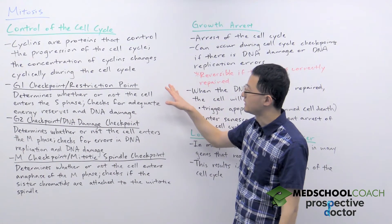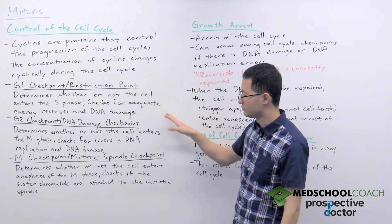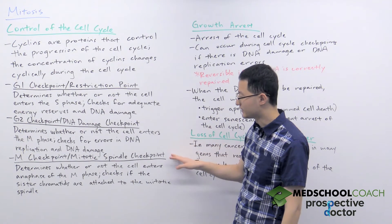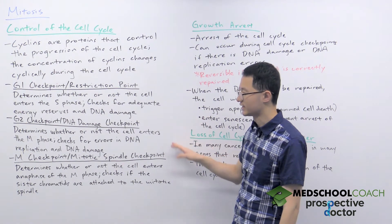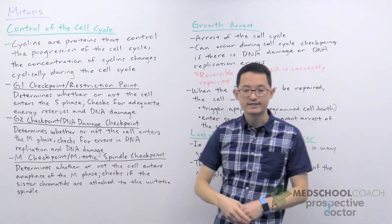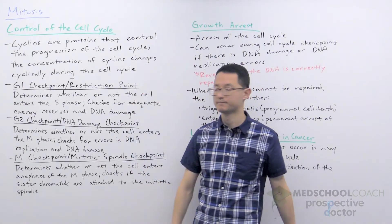The control of the cell cycle is also mediated by different checkpoints along the cell cycle. As you can see in this diagram there are three main checkpoints: the G1 checkpoint, the G2 checkpoint, and the M checkpoint.